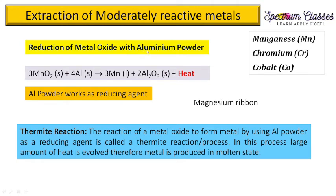Now, reduction of metal oxides with aluminium powder. Manganese, chromium, and cobalt are important examples. A key objective question is: is manganese reduced by carbon or by aluminium? The answer is aluminium. The reason is that in the reactivity series, manganese is placed above carbon, so it cannot be reduced by carbon. However, it is placed below aluminium, so aluminium — being more reactive — reduces it.